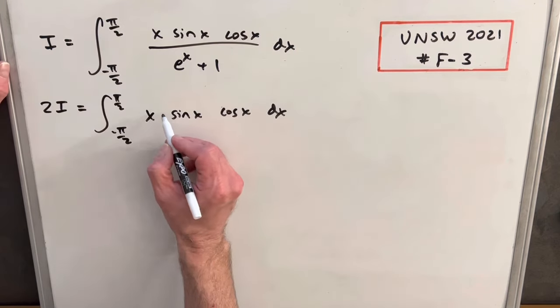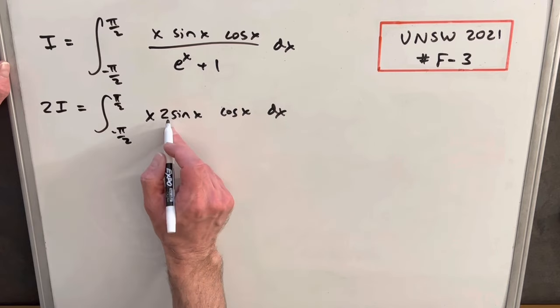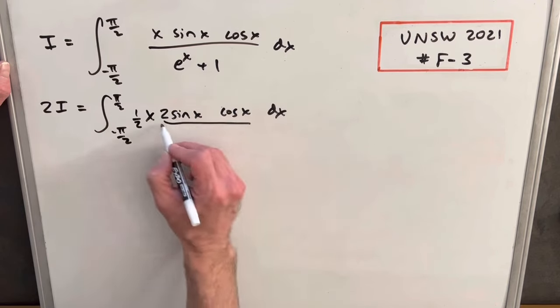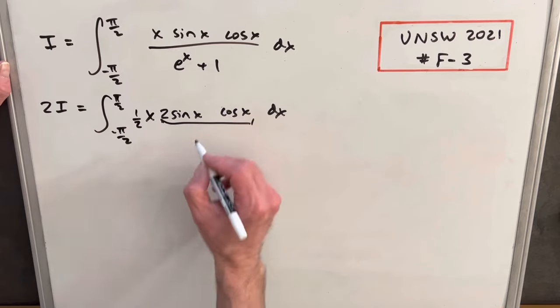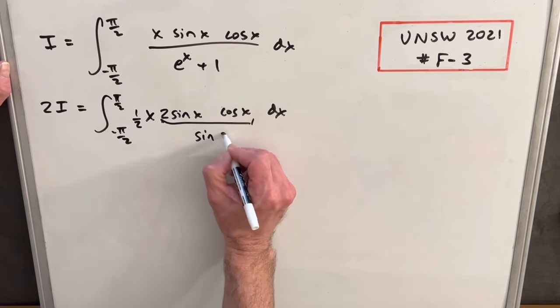One change before I integrate. I'm going to actually multiply by a 2 here and multiply by a half. What that's going to allow me to do is use the double angle identity. 2 sine x cos x is the same thing as sine of 2x.